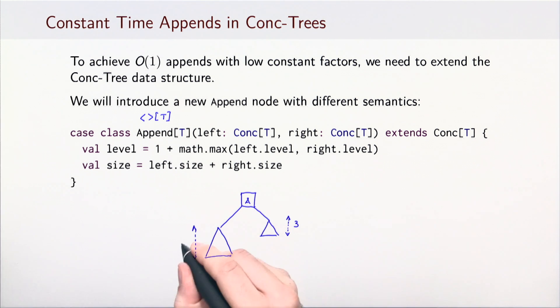So trees like this will be allowed. In this example, the left and the right subtrees have heights 5 and 3, and the difference between them is 2, but since they are connected by an Append node, this is fine.